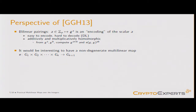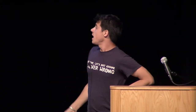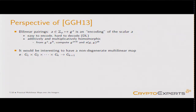The perspective taken by Garg et al. was to say that this bilinear pairing is more or less: you can see A as encoded in the value G to the A. So G to the A is an encoding of the scalar A — easy to encode but really hard to decode. It is actually additively and multiplicatively homomorphic: additively you multiply G^A and G^B, and multiplicatively you evaluate the pairing. It would be interesting to have the same thing but for a bunch of groups instead of only two.